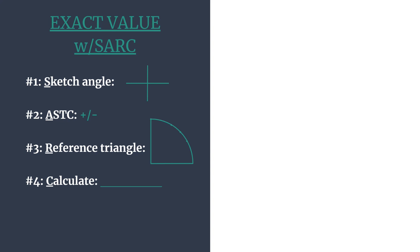S stands for sketch the angle's terminal side. A stands for the acronym ASTC so you can know which trig functions are positive in each quadrant and determine if your final answer should have a positive or negative sign. R stands for reference triangle, so you'll find the reference angle, special rectangle, and coordinates. C stands for calculate the trig ratio.